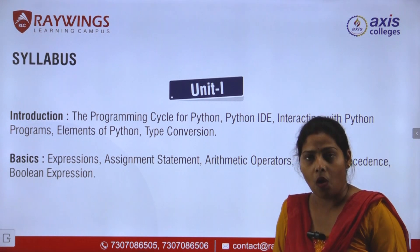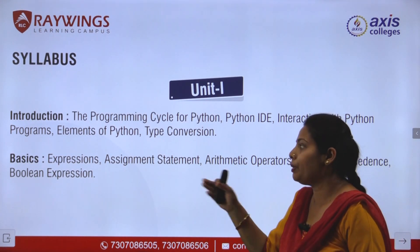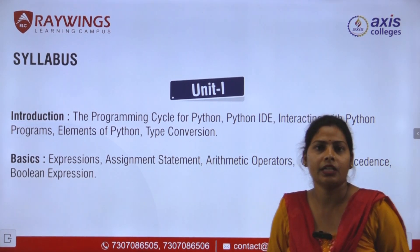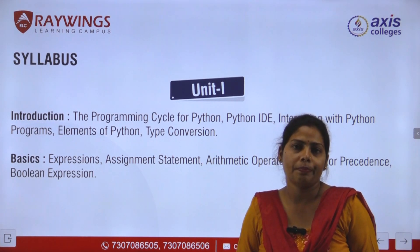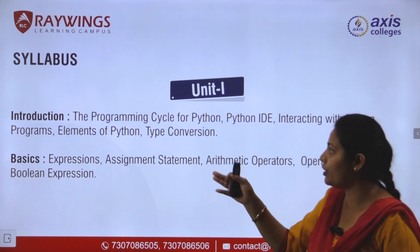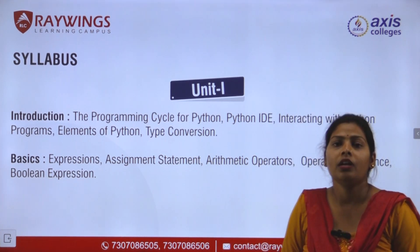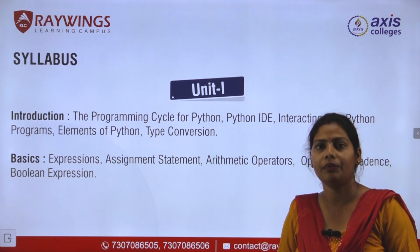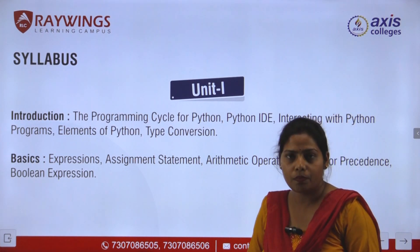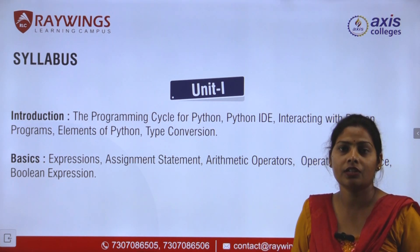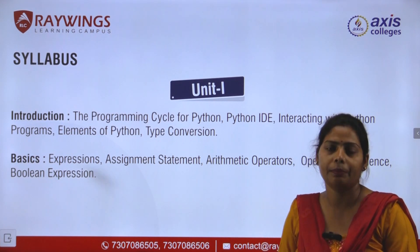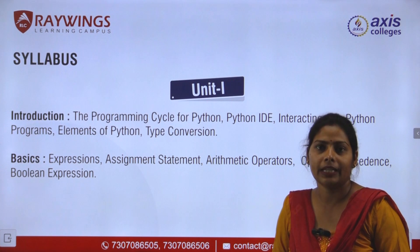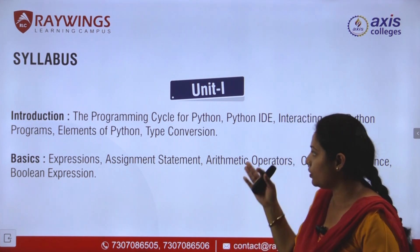Elements of Python covers the basic building blocks needed for any programming language — what is a variable, what are the keywords, identifiers, comments, how comments are written, and how programs are written using indentation. Type conversion is needed because in Python we don't define the data type, so when we perform calculations or operations, we need type conversion to convert one data type into another. Type conversion is of two types: implicit conversion and explicit conversion, which we will cover in Unit 1.